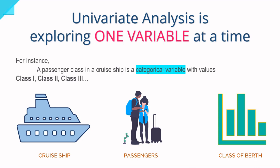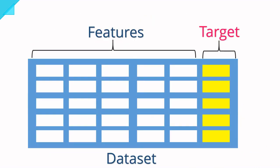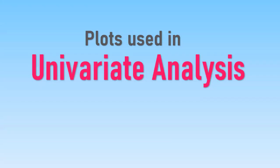In a typical dataset we have two groups of variables: independent variables and dependent variables. We call the dependent variable the target or response variable, which helps us to predict and make decisions from the analysis. Independent variables are called features or predictors, which help us predict the target variable.